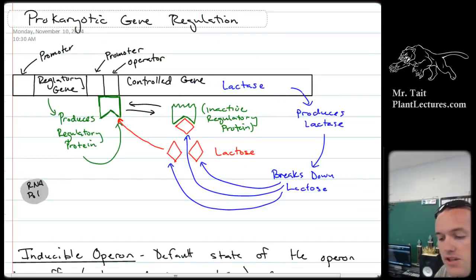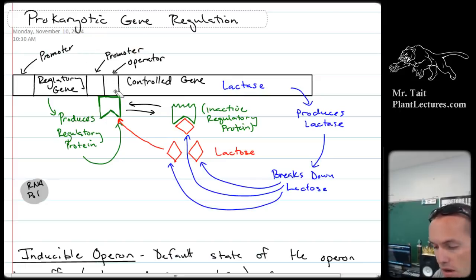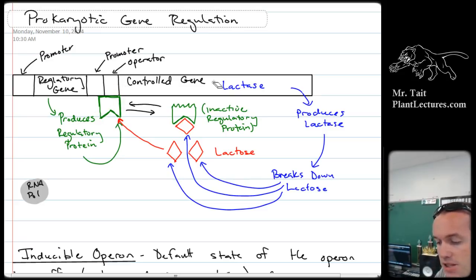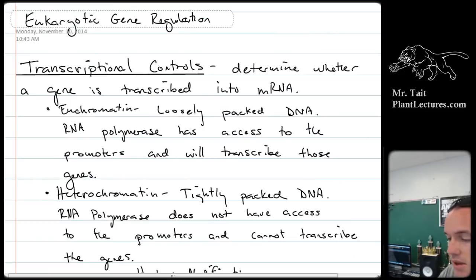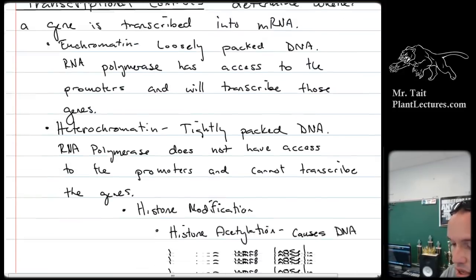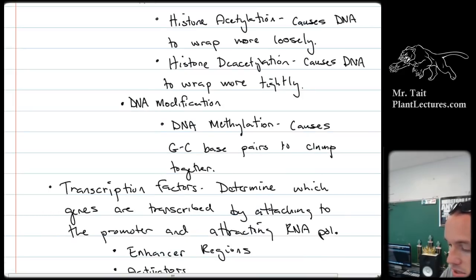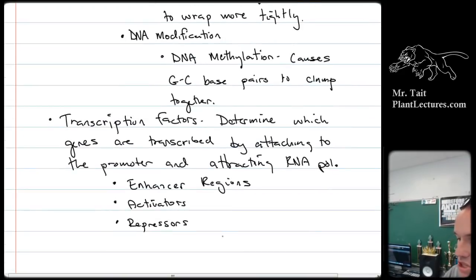Prokaryotic gene regulation is a lot simpler — it uses operons. Operons work by having a regulatory operator region that blocks the promoter so that RNA polymerase can't attach, so it can't transcribe that gene. Eukaryotic gene regulation is much more complicated — it uses transcriptional controls and things called transcription factors like enhancer regions, activators, and repressors.